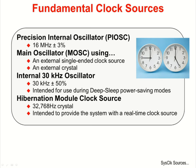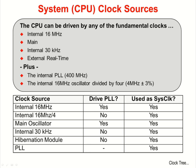The Hibernation Module clock provides the system with a real-time clock source. The system clock or CPU clock can be driven by any of the fundamental clocks: the internal 16MHz oscillator, the main oscillator, the internal 30kHz oscillator, and the external real-time oscillator. In addition, we have an internal phase lock loop, or PLL, that runs at 400MHz.